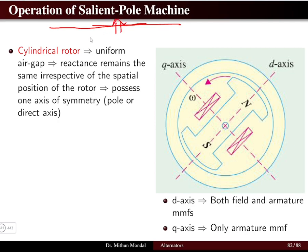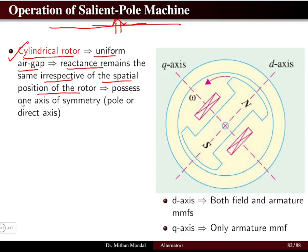In the salient pole machine, the poles project out and there will be a non-uniform air gap. Comparing with the cylindrical rotor machine: the cylindrical rotor machine has a uniform air gap between the stator and rotor, so the reactance remains the same irrespective of the spatial position of the rotor. When the rotor rotates, it cuts the flux present in the air gap, and since the air gap is uniform, the reactance remains the same.